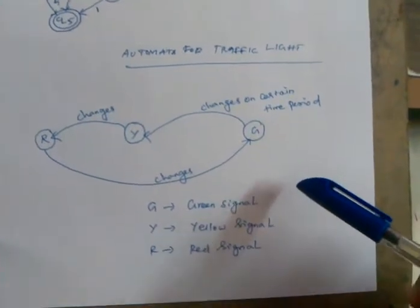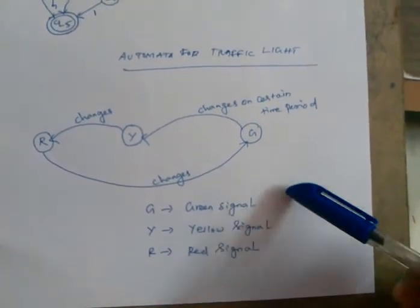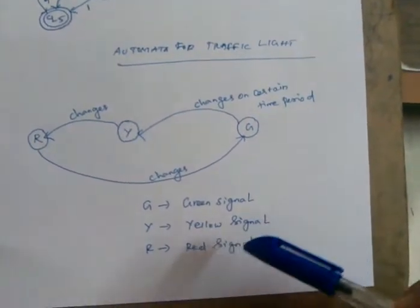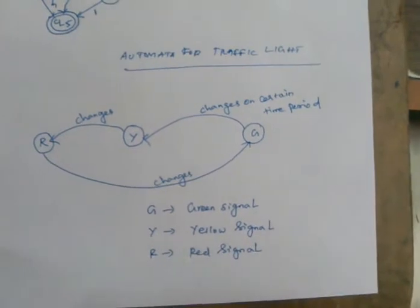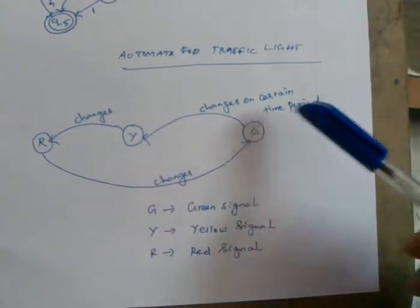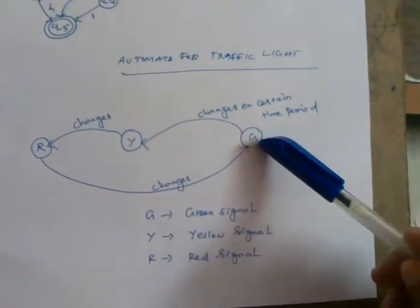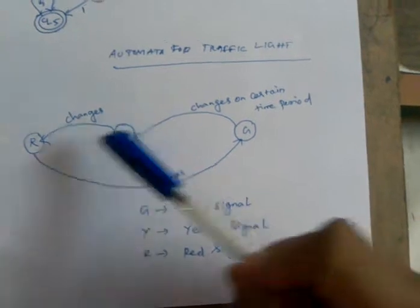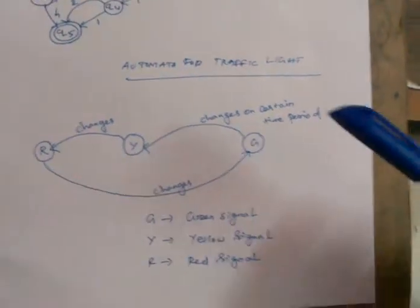What is the signal in a traffic light? There is a green signal, a yellow signal, and a red signal.